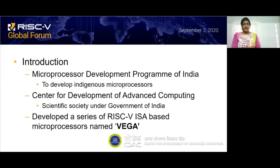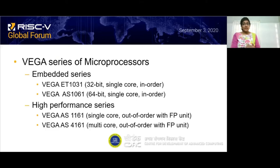Our organisation has developed the Vega series based on an open-source RISC-V instruction set architecture, which consists of 32-bit and 64-bit processors developed in single-core and multi-core configurations. The Vega series is suitable for embedded and high-performance applications. Processors for embedded applications are developed in single-core with in-order execution, while processors for high-performance applications are developed in single-core and multi-core, executed in out-of-order fashion, and support floating point units.